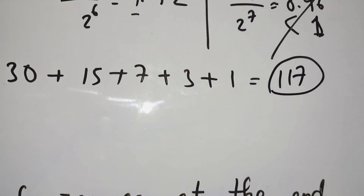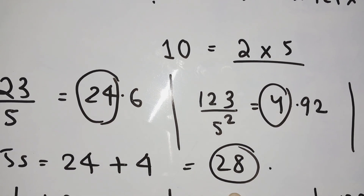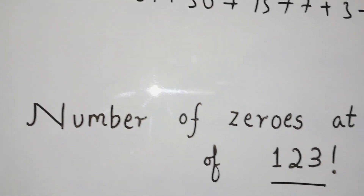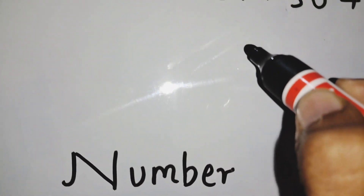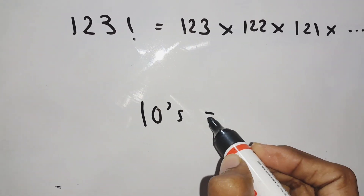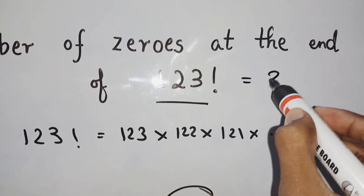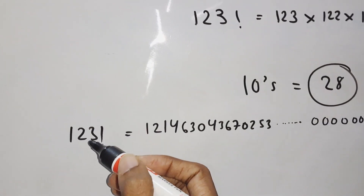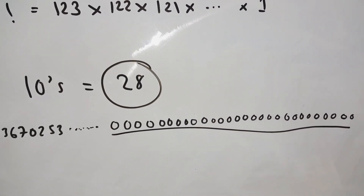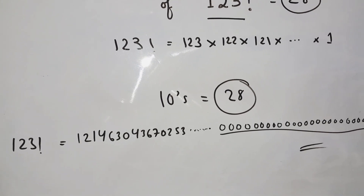The maximum number of 5s in 123 factorial is 28, and the maximum number of 2s is 117. To make pairs of 2 and 5, we take the minimum, which is 28. So the number of pairs of 2 × 5, i.e., the number of 10s, equals 28. Therefore, the number of trailing zeros at the end of 123 factorial is 28. Similar problems can be done with other factorials as well.